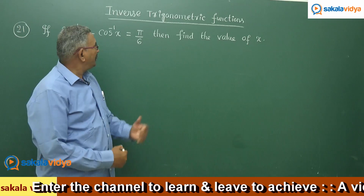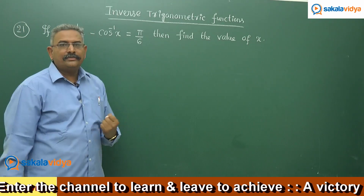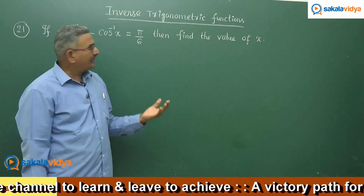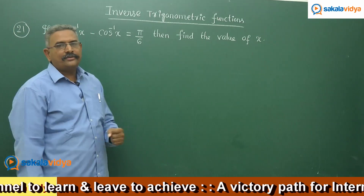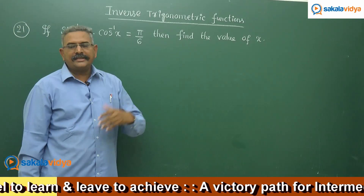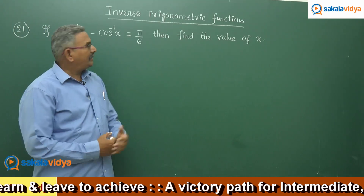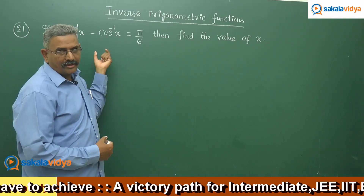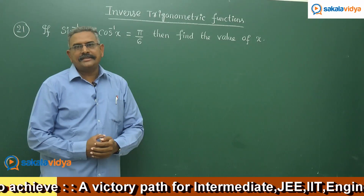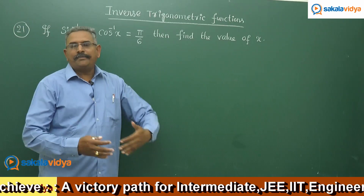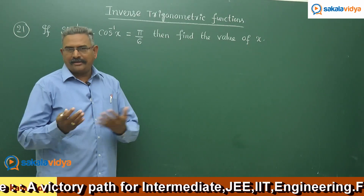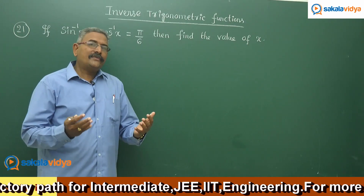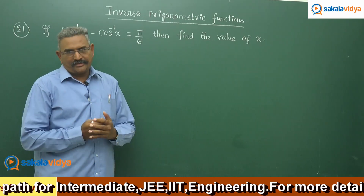Suppose if you say sin inverse x is equal to a, then x is equal to sin a. Next, cos inverse x is equal to b, then x is equal to cos b. Then if you apply sin of alpha minus beta equals to pi by 6, you will get the answer.